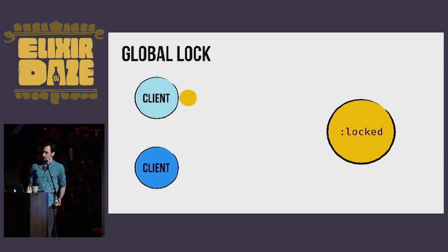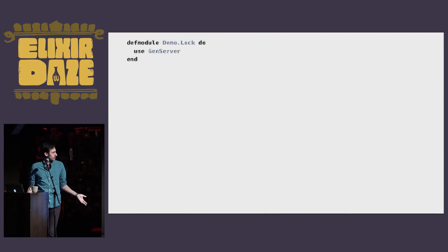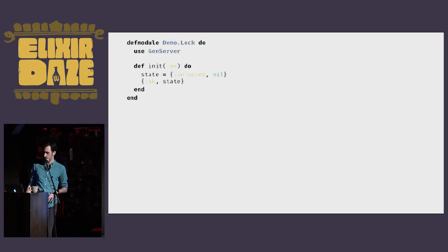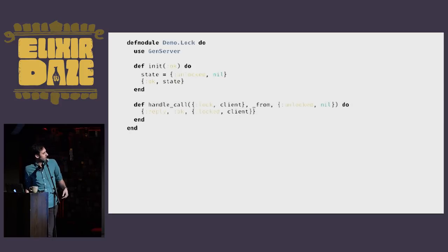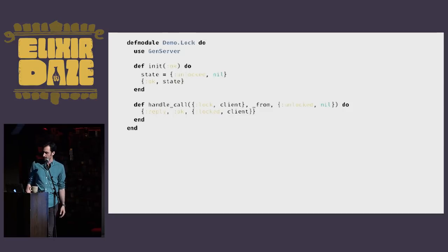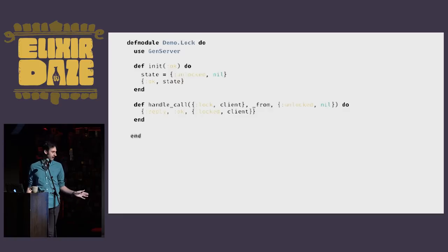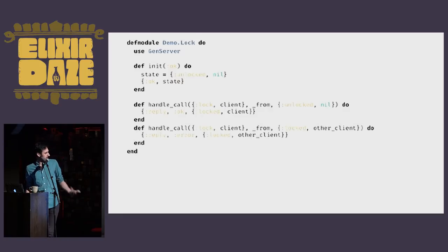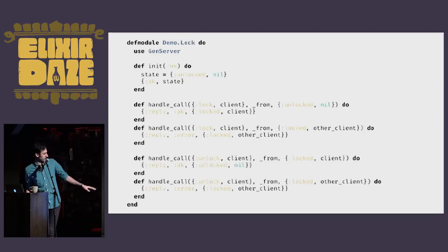The code for this is really straightforward. We start with a GenServer, initialize our state — this is all pretty standard stuff — and then handle some calls. For instance, we handle a lock call: if we're in an unlocked state, go ahead and transition to a locked state with that client. If we get a lock message from any other client once we're already in a locked state, go ahead and error it. The unlocking methodology works pretty much the same way.